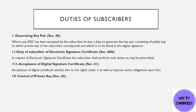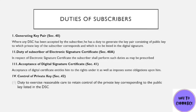Next is Control of Private Key. The subscriber has generated the private key themselves, and it is their duty to keep control of it and keep it secure. Don't share it with anyone — just like we say your PIN should not be shared with anyone. If you are using UPI, don't share your PIN. Similarly, the subscriber's duty is to exercise reasonable care to retain control of the private key corresponding to the public key listed in the DSC.